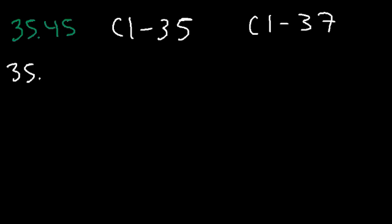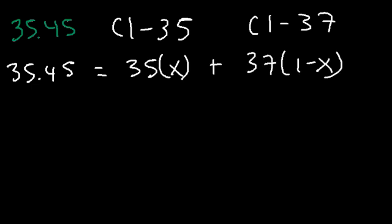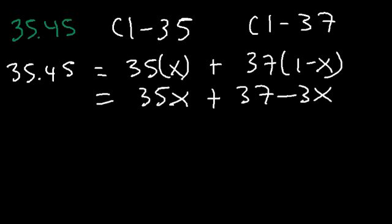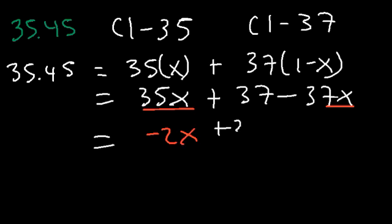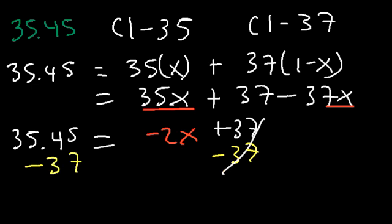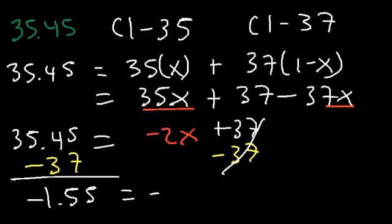So 35.45 is going to equal M1, which is 35, times X, plus M2, which is 37, times 1 minus X. So let's distribute the 37. So we're going to have 37 minus 37X. And let's go ahead and combine like terms. So 35 minus 37, that's negative 2X. And at this point, let's go ahead and subtract 37 from both sides.